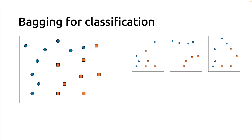So first, bagging, and let's consider the problem of classification. For the sake of simplicity, I will focus on a very small classification problem where we have just two input features, which are represented by the two axes of this diagram, and specify the location of data points. The goal is to predict the color and shape of the data points — either the blue circles or the orange squares. To use bagging, we will need to perform two steps. The first step is called bootstrapping, and the second step is called aggregation. Bagging stands for bootstrap aggregating.